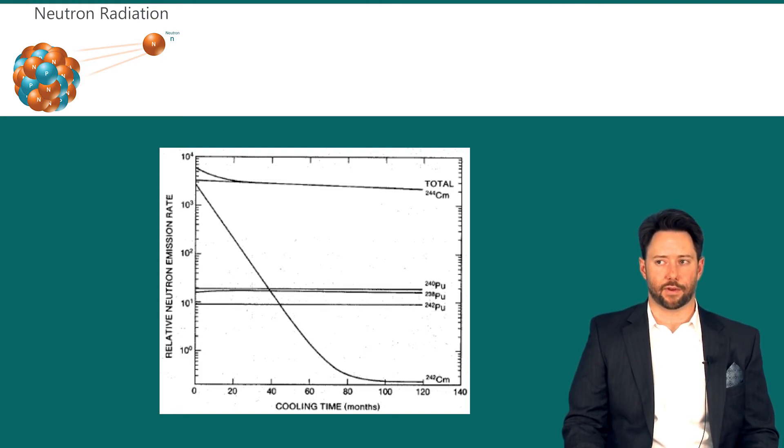That drops out and then basically the total neutron emission activity is completely represented almost by the curium-244. So again what we see here is that the plutonium signal is completely dominated by the higher actinide curium.